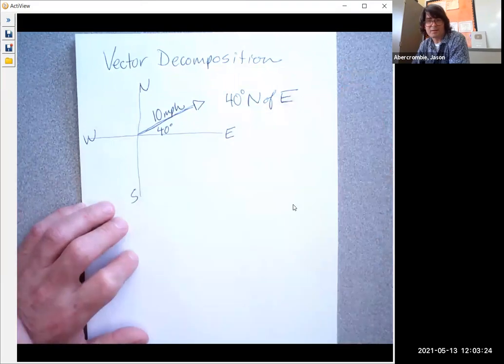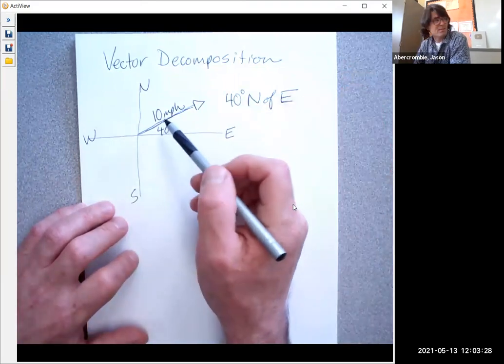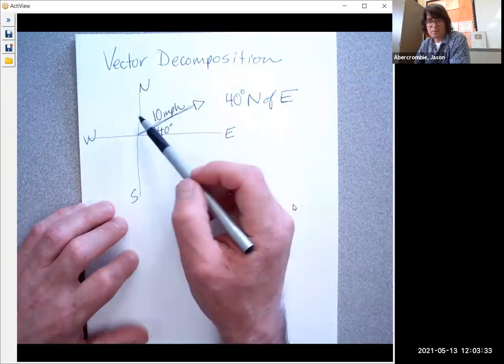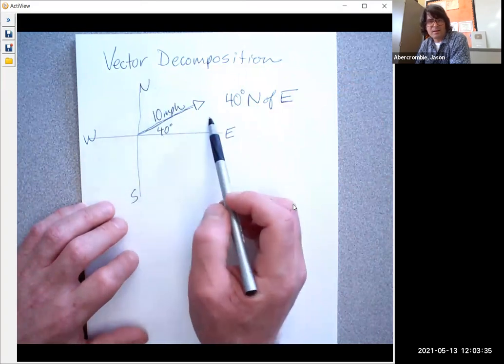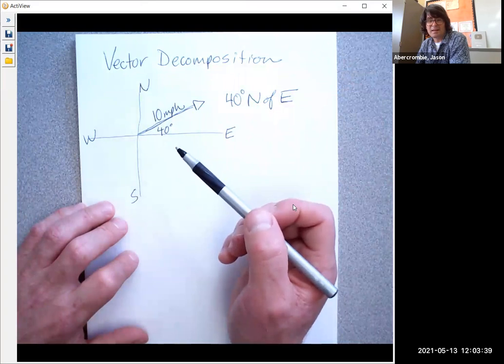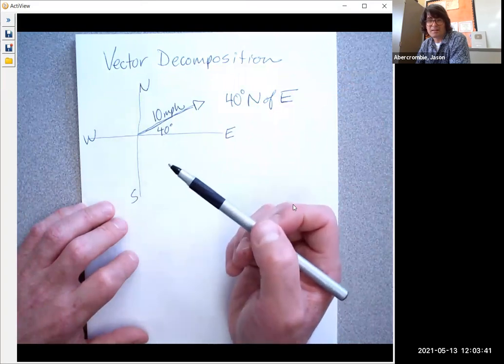You've got a direction and a magnitude. Now when you walk north of east like this, what's happening is you are walking a little bit north and also a little bit east. Vector decomposition is a process to figure out exactly how fast you're walking north and east separately.